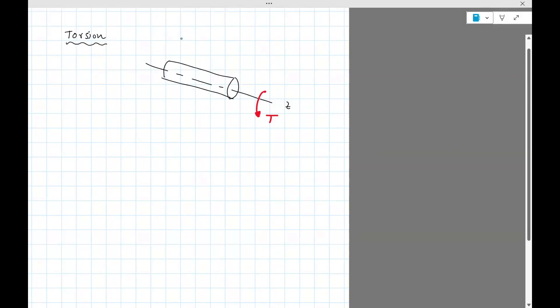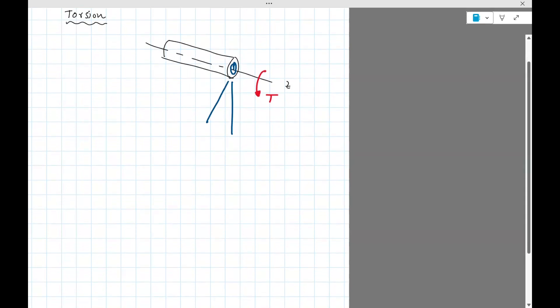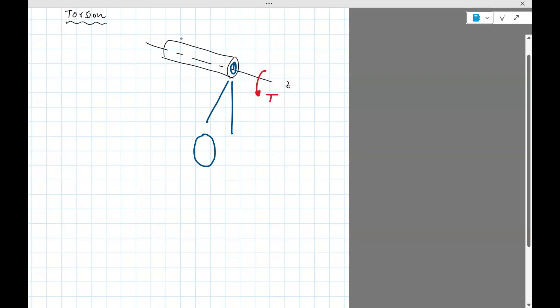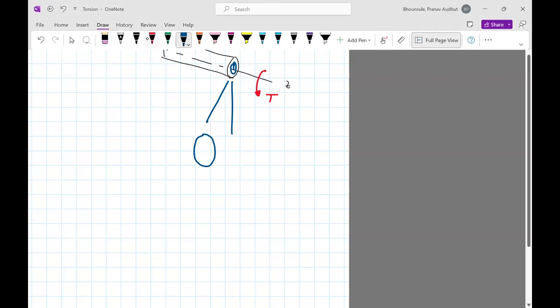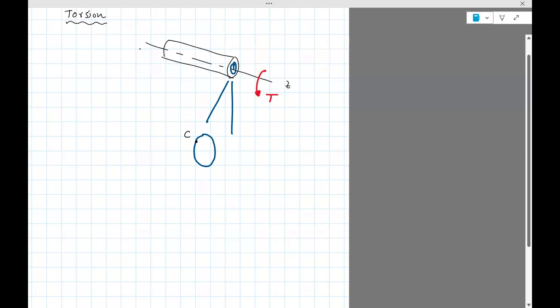Now, if we take a circle and then just blow this up, so we have a big circle there, this is just a blown up image of the blue. And if you look at what happens to a point, let's call this point C, on the shaft as a result of this torque T is that this point will move to another point C prime.